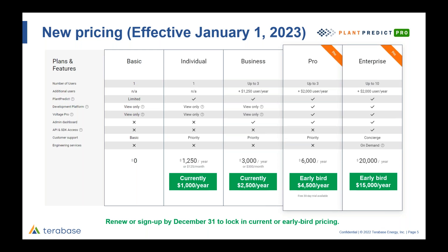The Business plan goes from $2,500 to $3,000 a year, or $250 to $300 per month. The Pro package is $6,000 per year - double the cost of the Business package - but we're offering an early bird discount of $1,500 for anyone subscribing before end of year, bringing Plan Predict Pro to $4,500 a year. For Enterprise, it goes to $20,000 a year, but you can save $5,000 with early bird pricing, getting it at $15,000 a year.